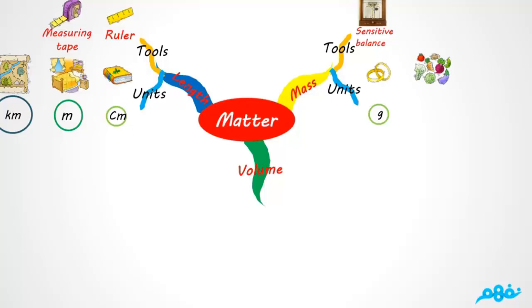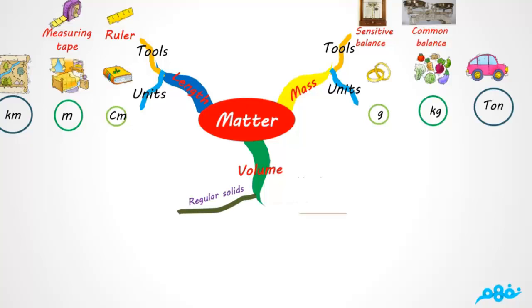To measure big masses like vegetables, the tool we use is a common balance or two-pan balance and the unit is kilogram. For measuring very big masses like a car, the unit is ton. To measure the volume of regular solids, liquids, and irregular solids.